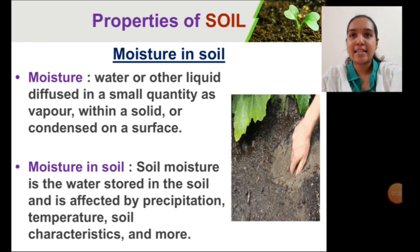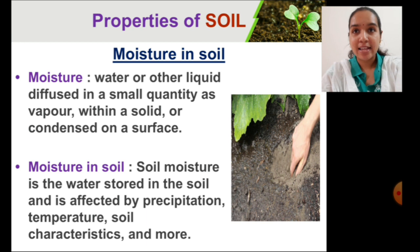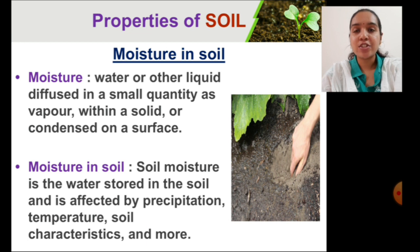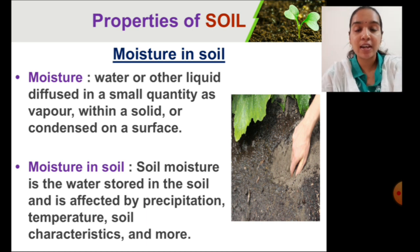Let us now learn about moisture in soil. First, we will see what moisture is. It is water as vapour which is condensed on a surface. Moisture in soil is the water present in soil due to the soil characteristics. Other reasons could be because of rain or a change in temperature in the atmosphere.